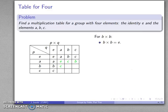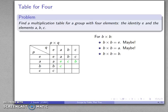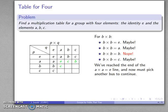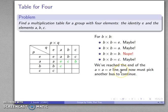For B times B, let's go through the possibilities. B times B could be E — no reason why that can't be. B times B could be A — that's a possibility as well. B times B equals B — we know that can't be the case because B is not the identity. B times B equals C — maybe that works too. We've reached the end of the A times A equals E line, but now there are three possible buses for B times B. Let's pick the B times B equals E bus.